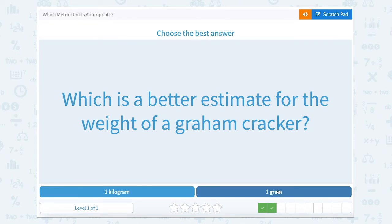What is the better estimate for the weight of a graham cracker? Well, one gram is about the size of a piece of rice. A kilogram is pretty heavy.